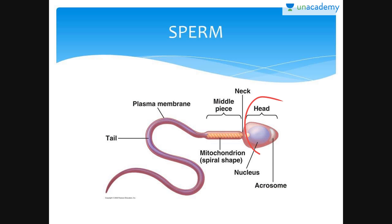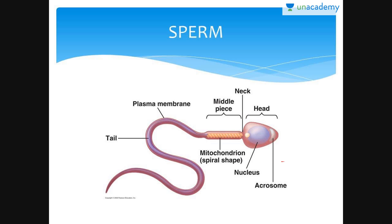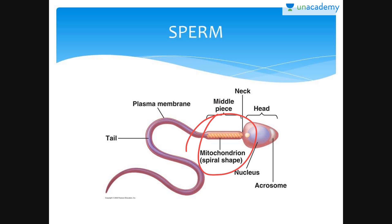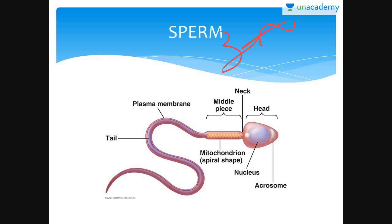The sperm head contains an elongated haploid nucleus. Above the nucleus, there is a cap-like structure called acrosome, which contains enzymes that help in fertilization of the ovum. The middle piece contains mitochondria which provide energy for movement of the tail, facilitating sperm motility. Human males ejaculate 200 to 300 million sperms during coitus.